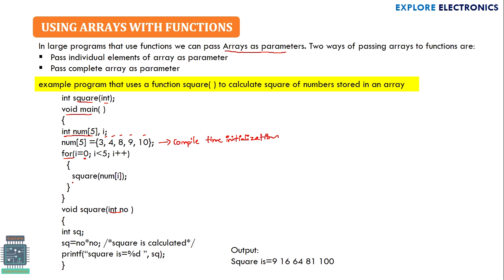Inside the for loop, we call the square function and send our elements. We pass num[i] — so in the first iteration, i is 0, meaning num[0], which is 3, will be sent to the function. The function receives this value. We specify int as the data type, and the variable that receives the data is named no.